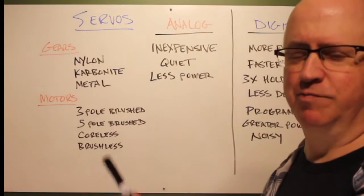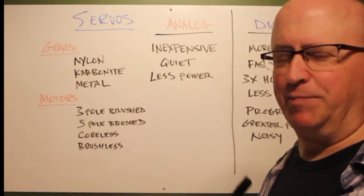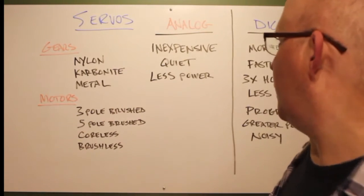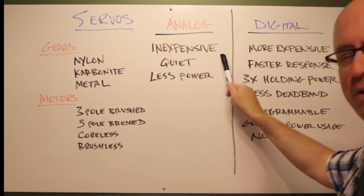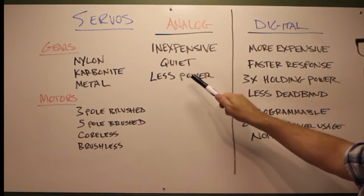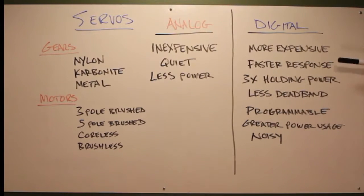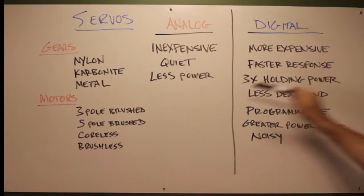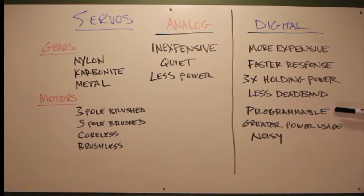Your next choice comes down to analog or digital. The basic differences between the two are: analog tend to be less expensive, they tend to be quiet, and they draw less power than a digital servo. Digital servos are more expensive, they have faster response time, they have up to about three times the holding power of an analog servo. They're programmable, so you can program them for direction rotation, overload protection, speed. Some of them you can slow them way down, which is really nice. But they use a lot more power and they are flippin' noisy.